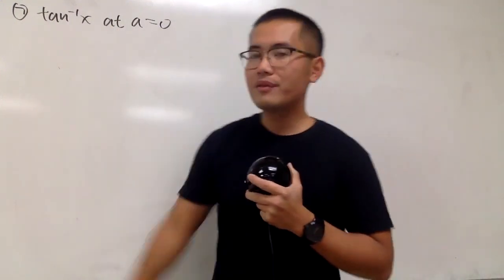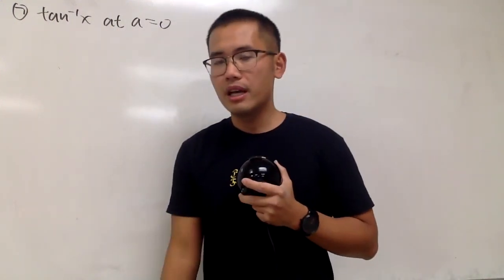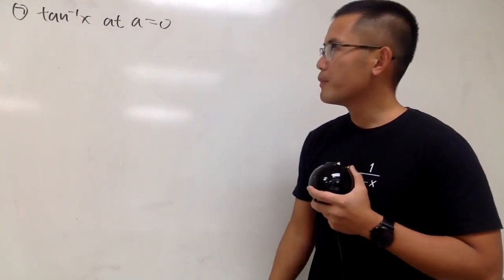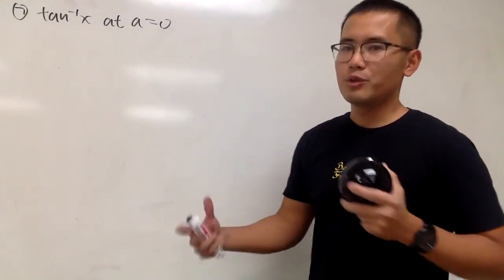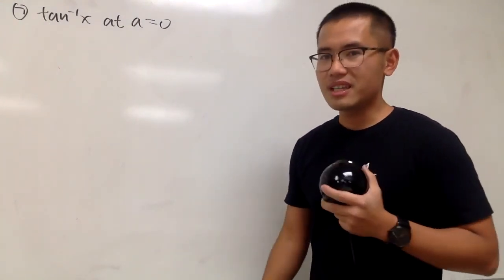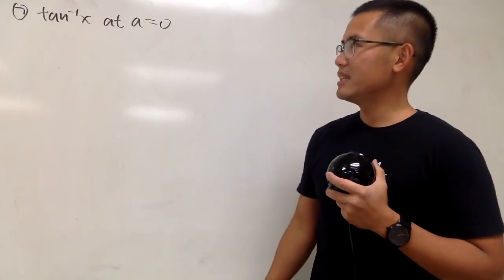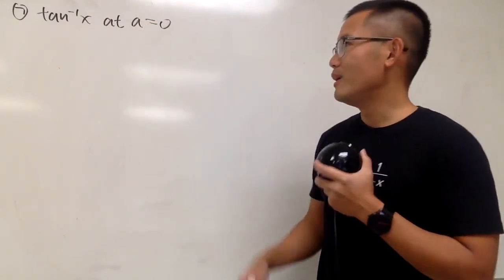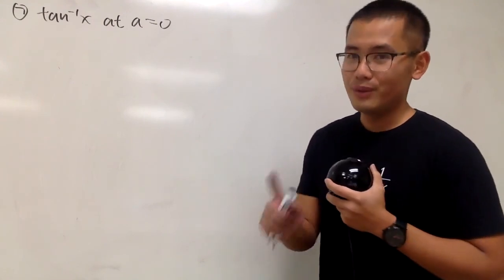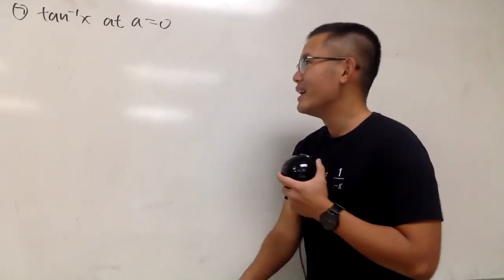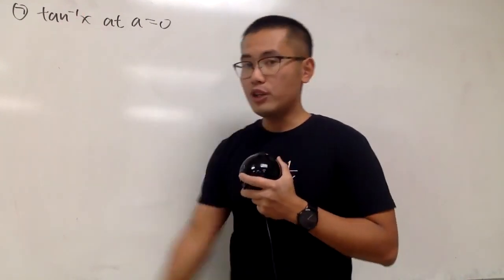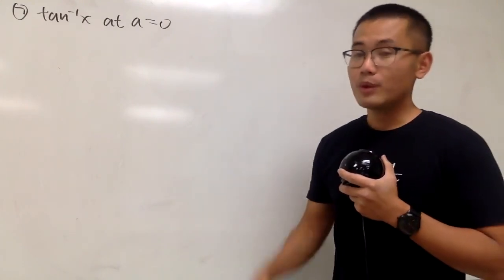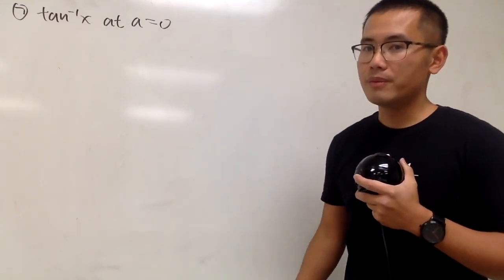What's the connection between inverse tangent and our best friend? It doesn't have a direct connection, but it's like a long-distance relative — you'll see. Because we know that if we differentiate inverse tangent, we get 1 over 1 plus x squared.